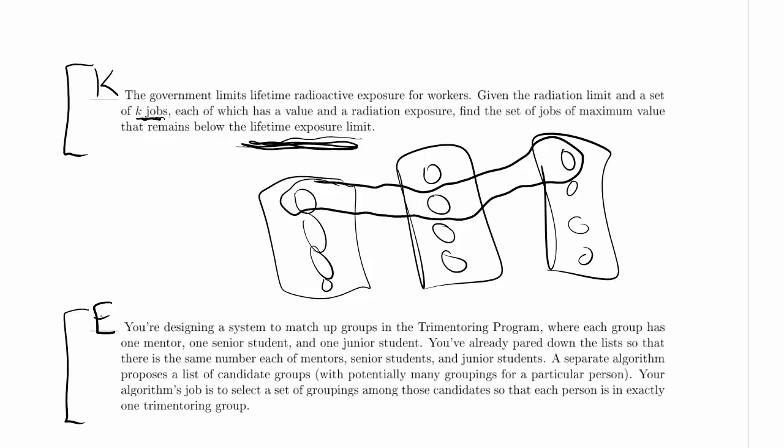And what is this list of candidate triples that we get in the 3D matching problem? Well, in this problem, we have a list of candidate groups and they are triples. So we put those together and our algorithm does exactly what 3D matching does.